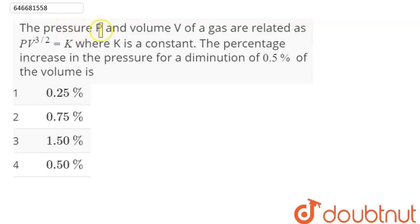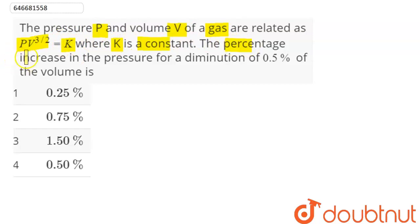The question is: the pressure P and volume V of a gas are related as P into V to the power 3 by 2 equals K, where K is a constant. Find the percentage increase in the pressure for a diminution of 0.5% of the volume.